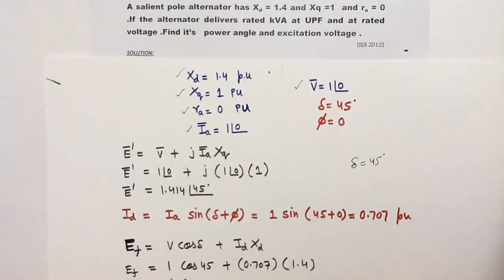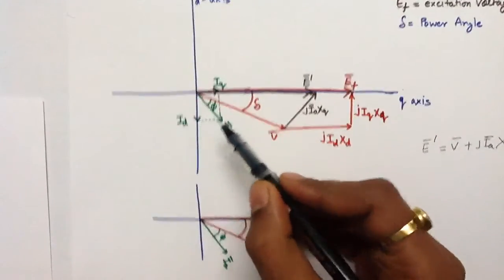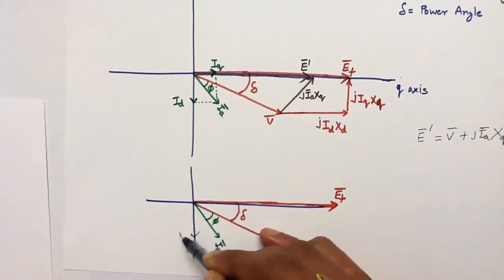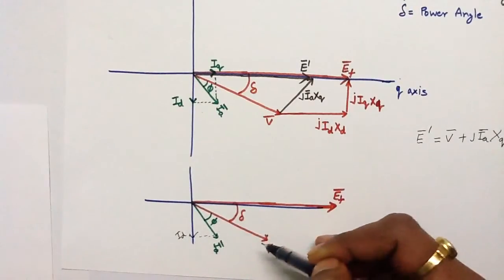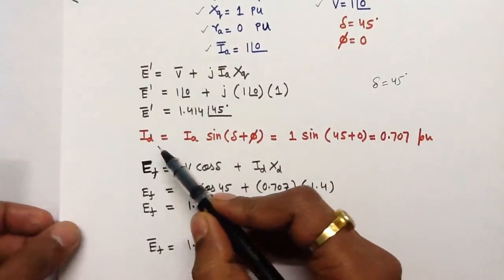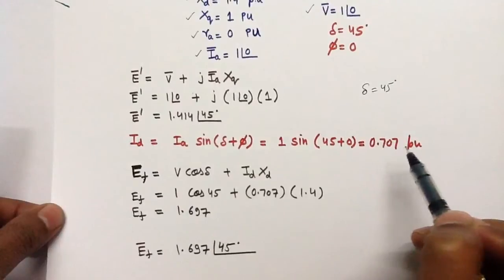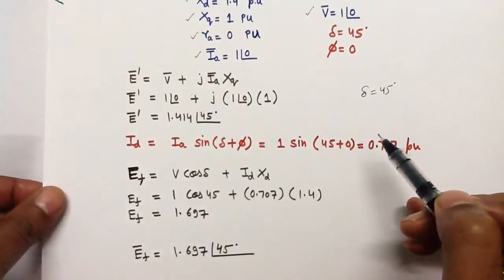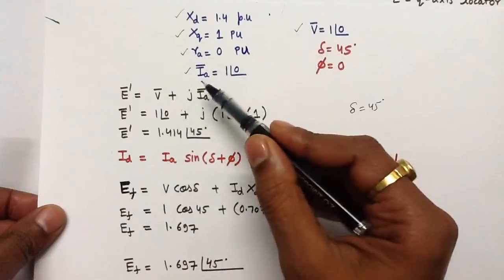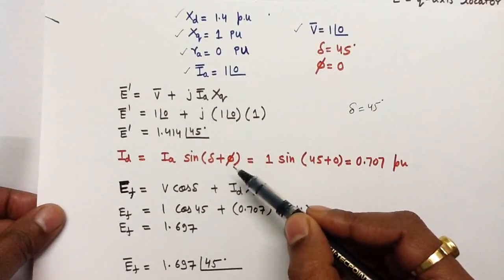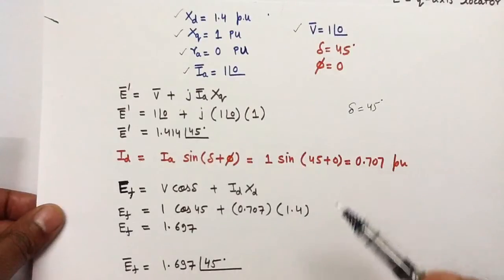Now we will calculate the value of id. From the phasor diagram, id can be written as ia·sin(delta + phi). Substituting the values — ia equals 1, delta equals 45°, and phi equals 0° (since unity power factor means no phase difference between terminal voltage and armature current) — you get id equals 0.707 per unit.